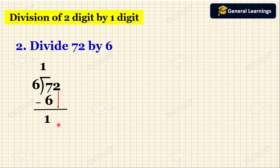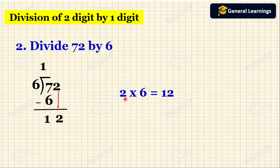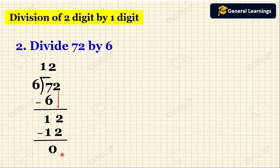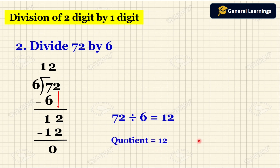Now we are moving to the next number which is 2. We bring down this 2 and write it next to 1. Now we are going to divide 12 by 6. We check the multiplication table of 6 — 2 sixes are 12. So we write 2 above next to 1, write the product 12 below 12, draw a line, subtract, and get the answer as 0. So when we divide 72 by 6, the quotient is 12 and the remainder is 0.